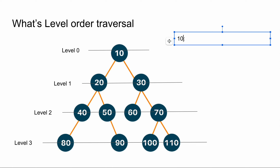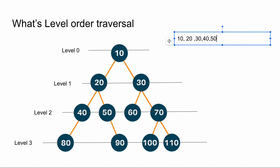For example, you will first print the elements at level 0, that is 10. After you are done with level 0, you will go to the next level and print 20 and 30. Only after you are done with level 1 will you go to the next level and print 40, 50, then 60 and 70. Then again you go to level 3 and print the elements from left to right. In every level, you have to print elements from left to right, and only after finishing that level do you go to the next.